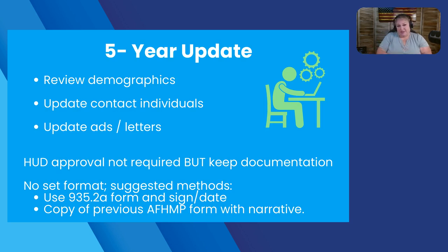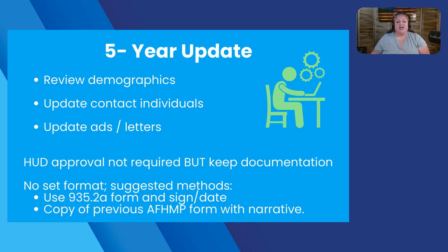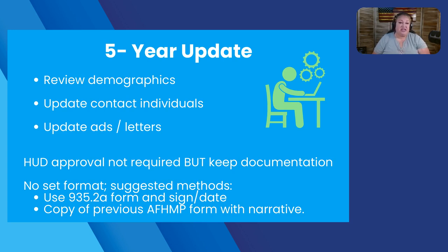If you don't need to do a full marketing plan, you're going to be doing five-year updates. The process is: review the demographics to make sure they haven't changed, check all the contact people and organizations you've listed to make sure there haven't been significant changes, and update your ads and letters if needed. HUD approval is not required for five-year updates, but you should keep documentation showing that you did it. You can use the 935.2A form, signing and dating it to signify when your update was, or use a copy of your previous marketing plan with a narrative. You just want to make sure whatever documentation you're using shows that you reviewed it and determined it doesn't need any significant changes.